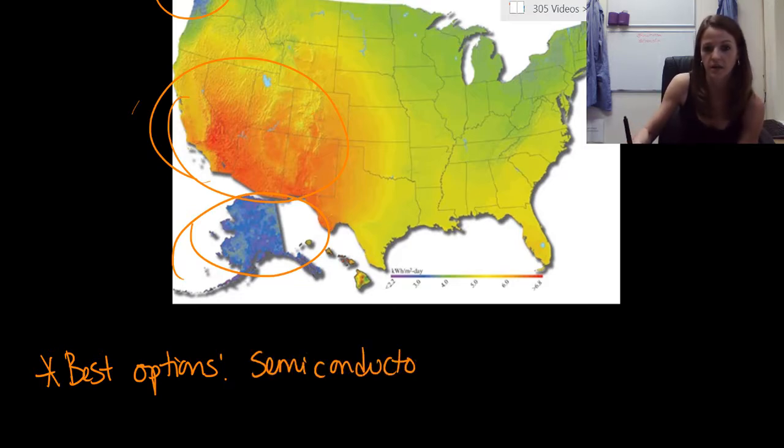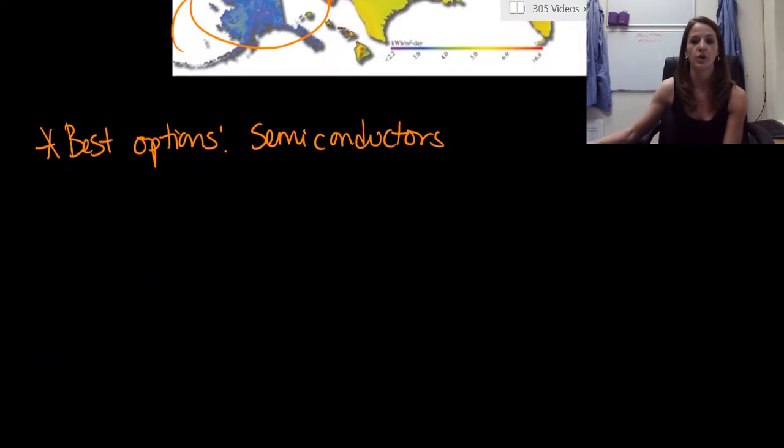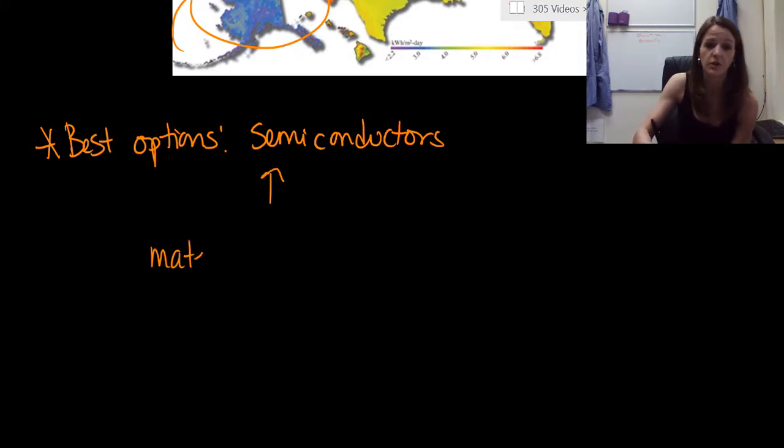So semiconductors are the way to go if you are absolutely sure that you want to use solar energy. So now, what is a semiconductor? A semiconductor is essentially a material or materials